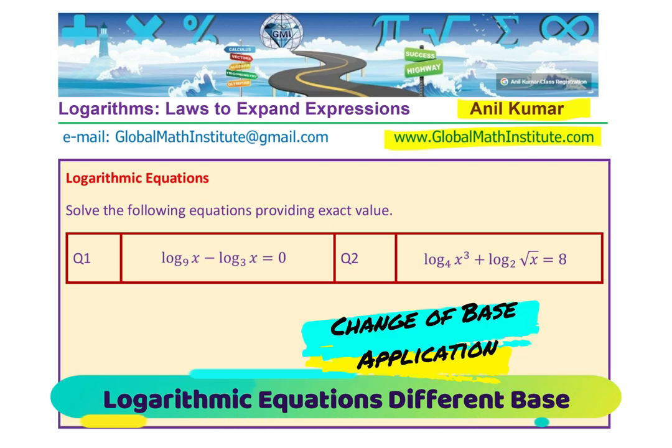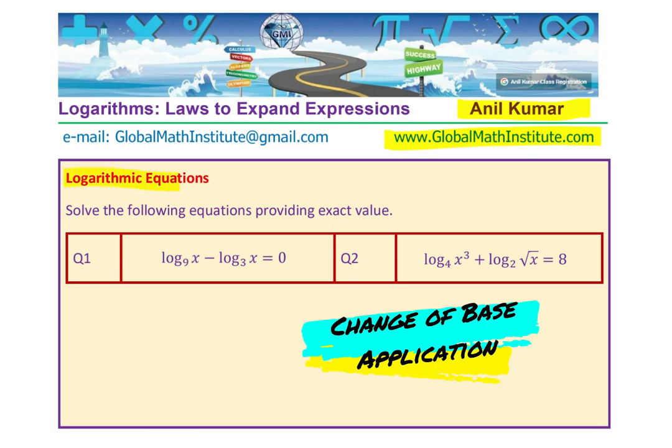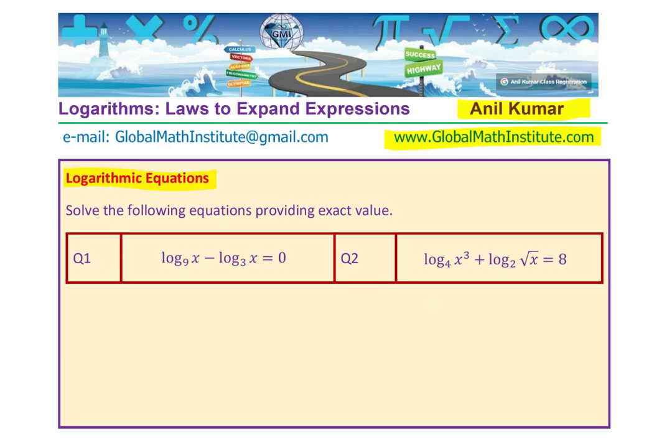We have two equations here and we are going to solve these logarithmic equations where the base is different. Question: solve the following equations providing exact values. Question number 1: log to the base 9 of x minus log to the base 3 of x equals 0. Question number 2: log to the base 4 of x cubed plus log to the base 2 of x times square root of x equals 8.